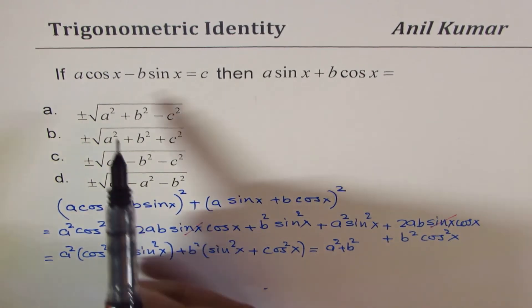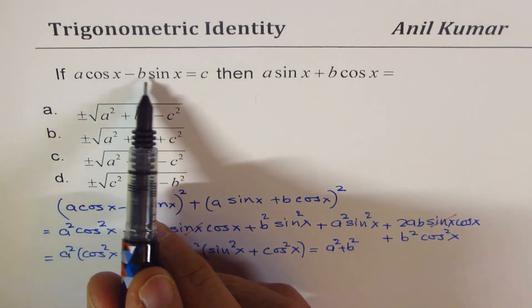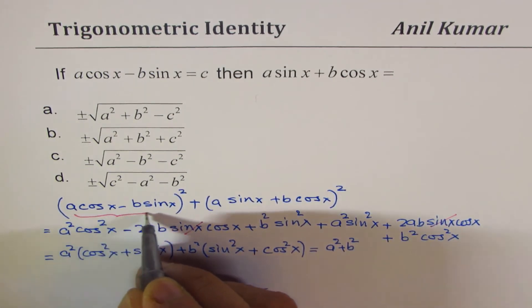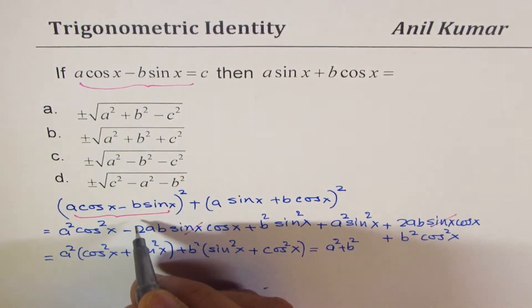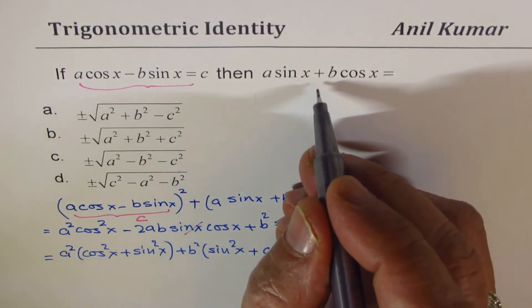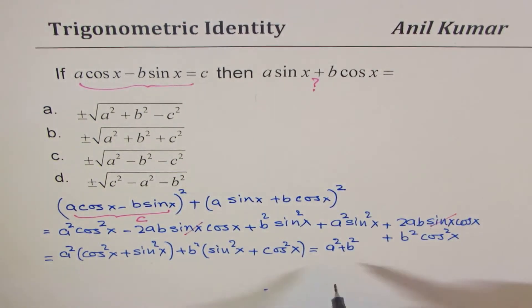However, we know that A cos x minus B sin x is C. So I could replace all this by C. So we have C square plus this term, which we want to find, is equals to A square plus B square, you get an idea.